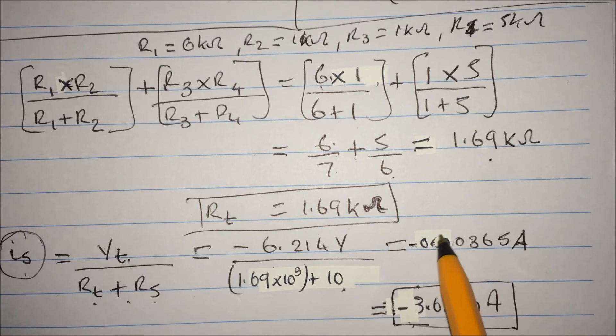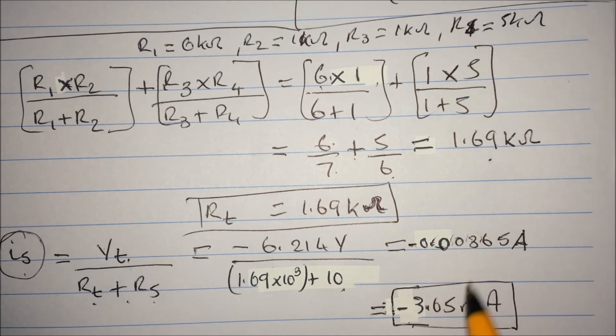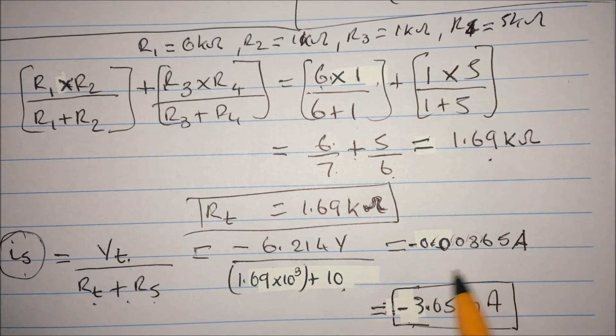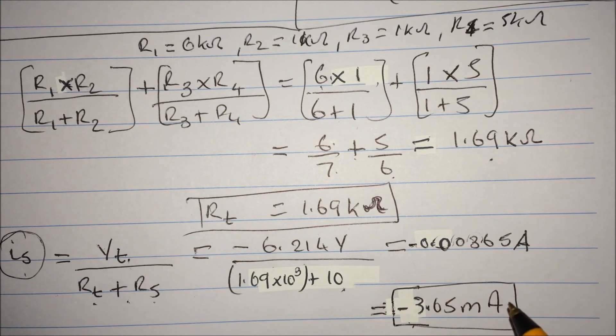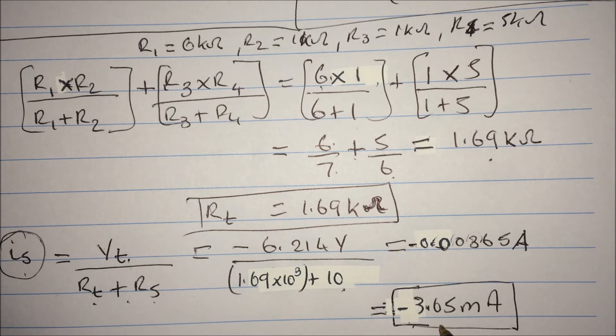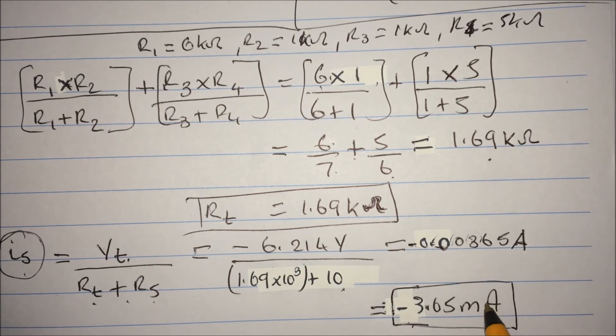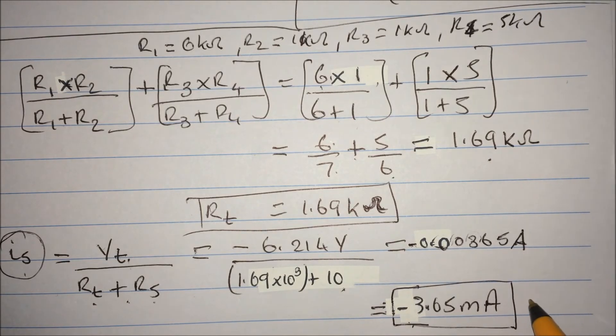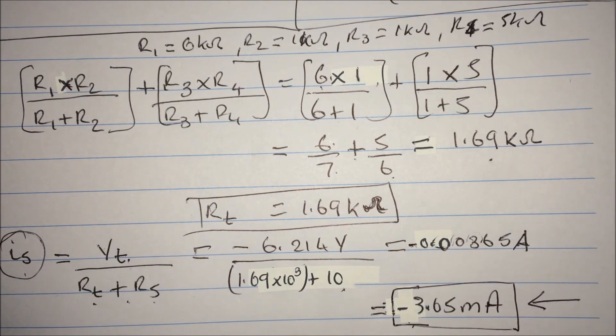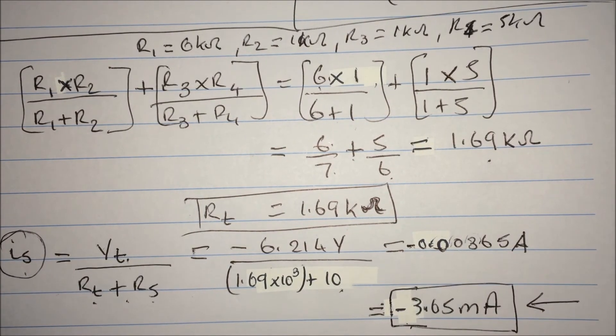And that give us this answer which was minus, actually see make sure we write this there. That's minus, minus 0.00365 amps, and as a good engineer move 1, 2, 3, which is multiply by a thousand not dividing, and it gives us 3.65 milliamps. And that's pretty much it.